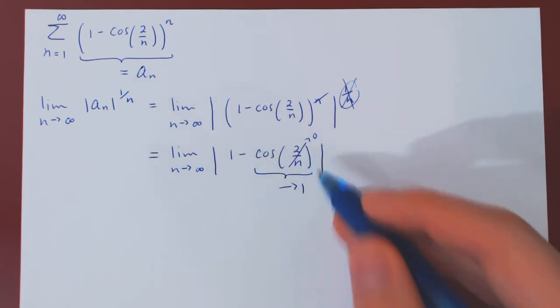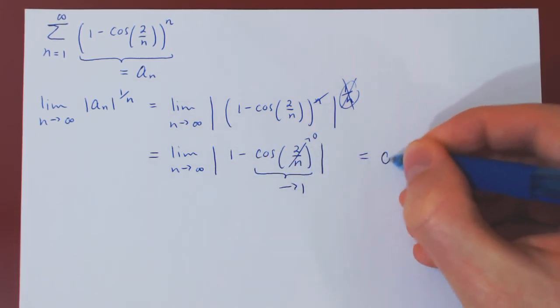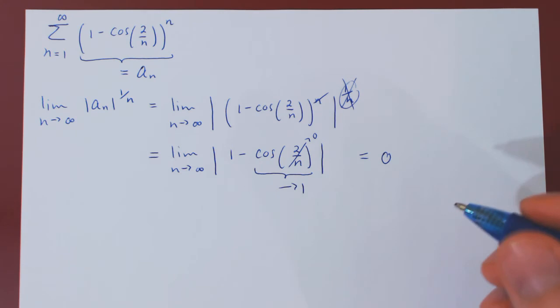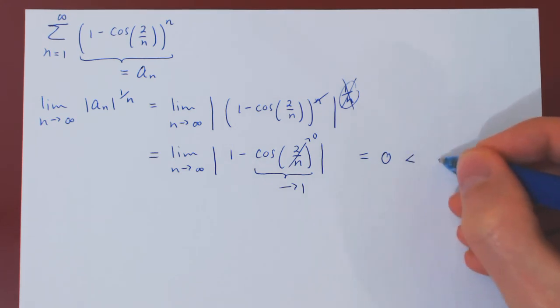And the absolute value of 0, of course, is 0. And so the limit is simply 0, which is obviously strictly less than 1.